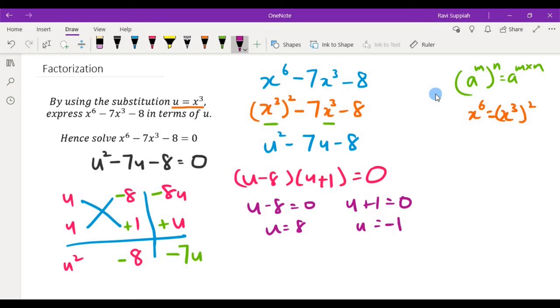Now we know that we started off by using this substitution. So right now what we need to do is substitute back u as x cubed equals 8 and x cubed equals minus 1. So x is the cube root of 8 which is 2, and the other solution is the cube root of minus 1 is minus 1. So the two answers for this factorization question are x equals 2 and x equals minus 1.